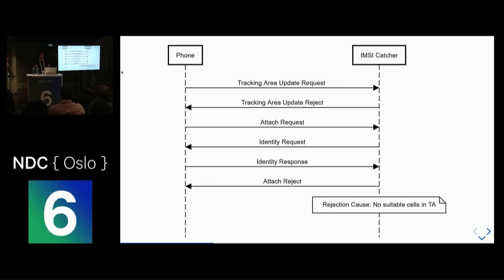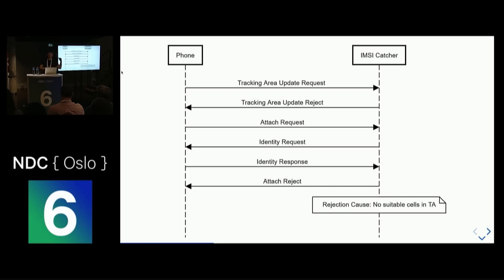So I'm just rejecting this message. When the phone receives this rejection, it initiates an attach request message, and in this attach request it sends its identity. Unfortunately, this is only the temporary identity, which I have no interest in — I only want the permanent one. So I return with an identity request, requesting the phone to send its permanent identity, the IMSI. The phone sees no problem with this and just passes the IMSI along in the identity response message.